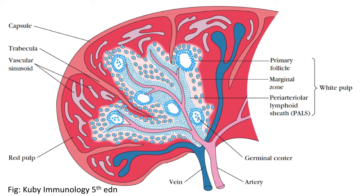Each lobule has an artery that penetrates inside the lobule and this artery is surrounded by T lymphocytes. The lymphocytes that surround the artery form a sheath around the artery and therefore it is referred to as the periarteriolar lymphoid sheath, abbreviated as PALS, which is rich in T lymphocytes, with a few dendritic cells and a few B cells also present.